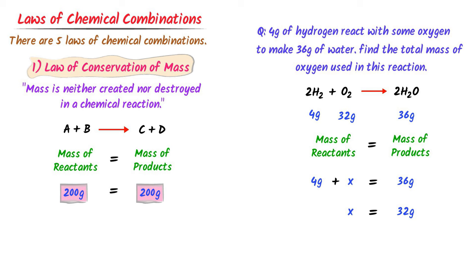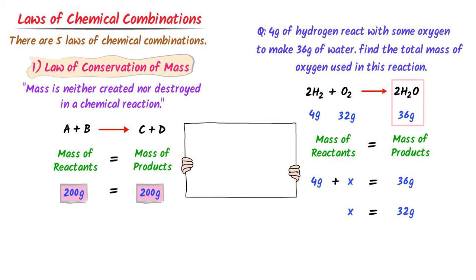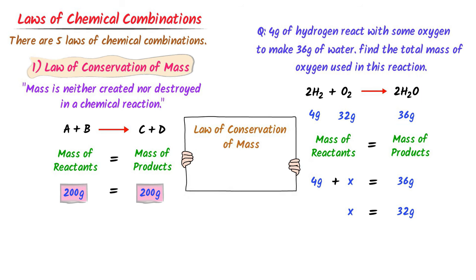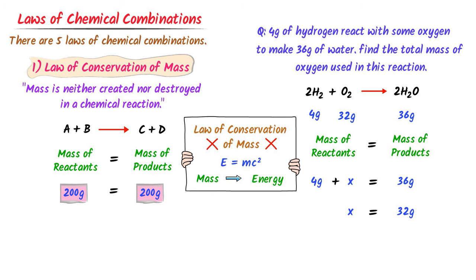Hence, the law of conservation of mass is verified: 36 grams of reactants react together to form 36 grams of products. Remember that this law is not 100% valid, because according to E = mc², some mass of the reactants converts to energy. The law of conservation of mass states that mass is neither created nor destroyed in a chemical reaction — rather, it remains constant.